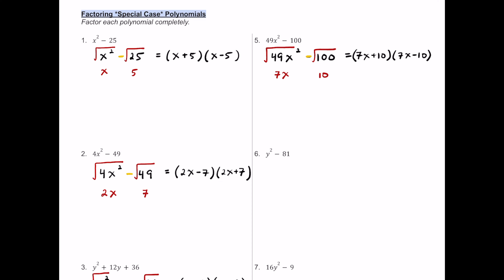For number six we have y squared minus 81. This is a difference of squares — not a perfect square trinomial. The square root of y squared is y and the square root of 81 is 9. So we can factor this into (y minus 9) multiplied by (y plus 9). It doesn't matter whether you put the minus or the plus first.